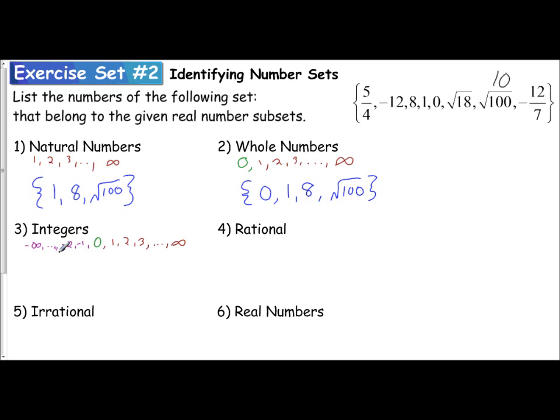I need to fill in, are there any negatives as well? And I can see negative 12. But then I also see negative 12 sevenths. Is that an integer? Remember, integers are defined as positive and negative whole numbers, and our fractions are not located in the whole number list. So my list for integers: I have negative 12 and then all of my whole numbers, so 0, 1, 8, and the square root of 100.